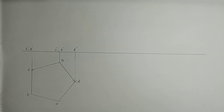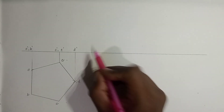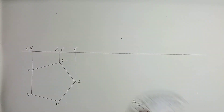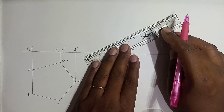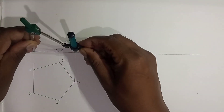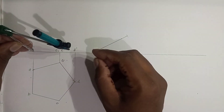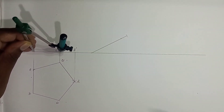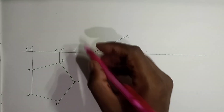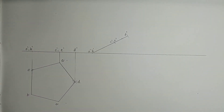Now this plane is making a surface inclination of 30 degrees, so the surface inclination will come in the second stage. Taking a suitable point at a suitable distance, we mark a point at 30 degrees — this is the surface inclination. Taking distance AD in the compass and placing it accordingly, we also take AC in the compass. We are directly transferring the points from the front view to the second stage, giving us A-dash, B-dash, C-dash, E-dash, and D-dash in the second stage.